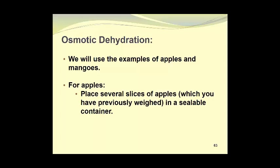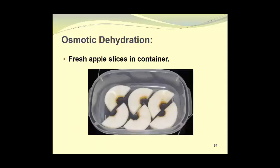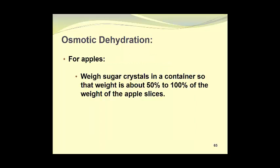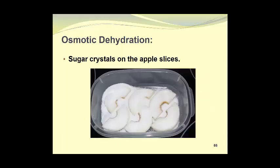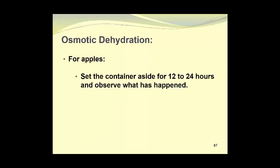This will work even if the slices overlap. So here we see the fresh apple slices in the container. Then we are going to weigh some sugar crystals in the container so that the weight is about 50-100% of the weight of the apple slices. The sucrose crystals are then going to be evenly spread over the apple slices, and the container will be sealed. Here you see the sugar crystals on the apple slices. We are going to set the container aside for 12 to 24 hours, and then observe what has happened. This can be done at room temperature quite effectively.